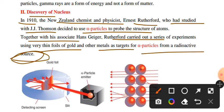Discovery of the nucleus: New Zealand chemist and physicist Ernest Rutherford, who had studied with J.J. Thomson, decided to use alpha particles to probe the structure of atoms. Together with his associate Hans Geiger, Rutherford carried out a series of experiments using very thin foils of gold and other metals as targets for alpha particles from a radioactive source.